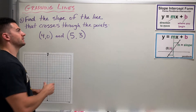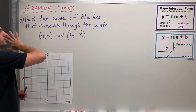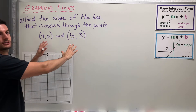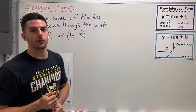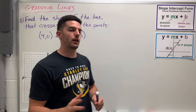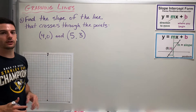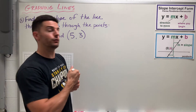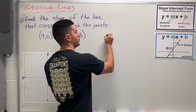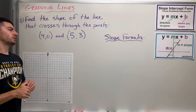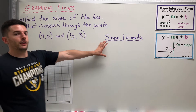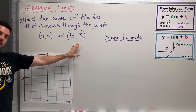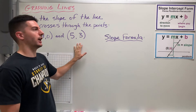We are still graphing lines, and now we are dealing with finding the slope of the line that crosses through the points of these two. So a little bit different of how it asks this problem, and we're going to be introduced to a new formula here — that's called the slope formula. We're trying to find the slope of the line that crosses through these two points. So what is this actually saying?